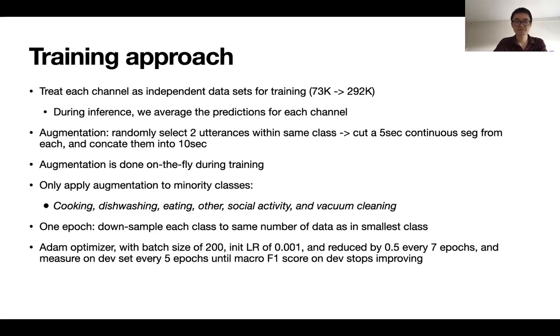And we only apply augmentation to minority classes from the previous table distribution of the classes. We see that the cooking, dishwashing, eating, other social activity, and vacuum cleaning are actually the minority classes. And we only apply augmentation to these classes.